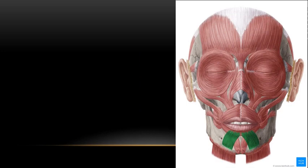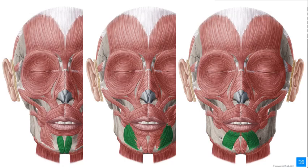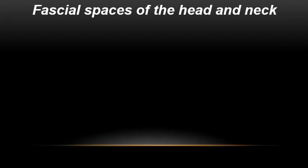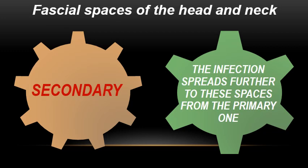Here are the muscles of facial expression governing the spread of infection in the anterior region, labeled in green. On the right-hand side is the depressor labii inferioris or quadratus labii inferioris. In the middle is the triangularis muscle or depressor anguli oris, and on the left-hand side the mentalis muscle. According to the order of infection with respect to the offending tooth, we can classify facial spaces into primary or secondary. In primary facial spaces, the infection spreads directly from the offending tooth to the space in anatomical vicinity. In secondary facial spaces, the infection spreads further from the primary space.